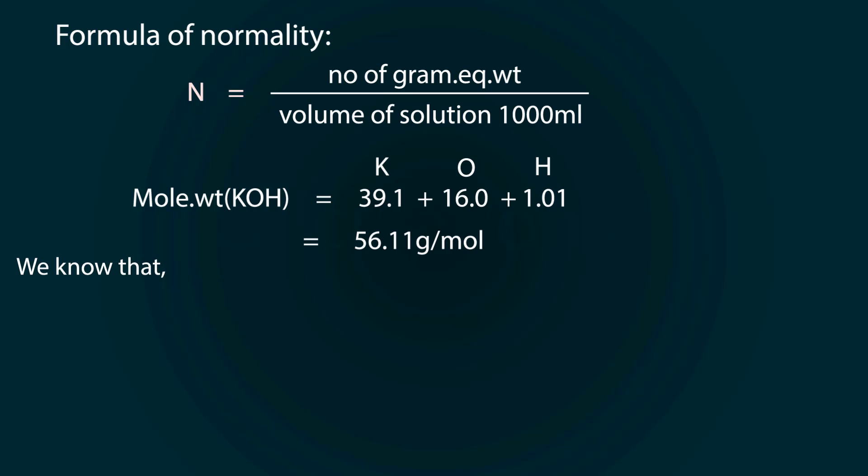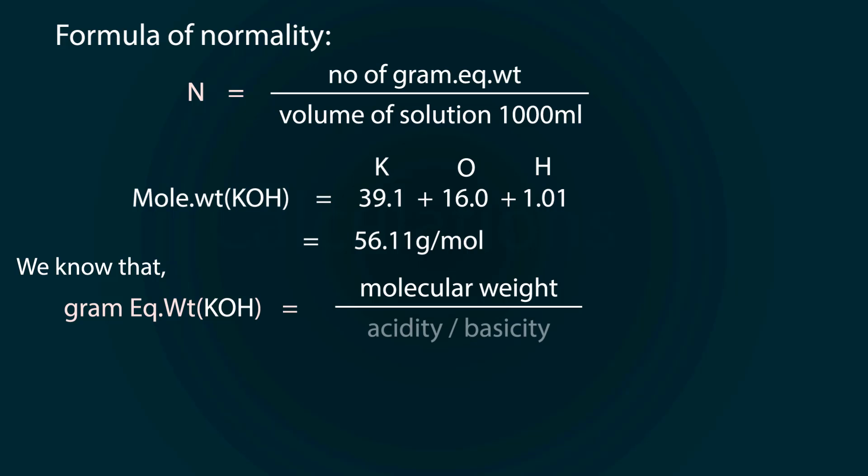We know that gram equivalent weight is equal to molecular weight divided by basicity. So equivalent weight is equal to 56.11 divided by 1 because basicity of potassium hydroxide is 1. Gram equivalent weight is 56.11 grams, so we need to dissolve 56.11 grams KOH for one normal.